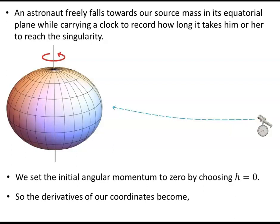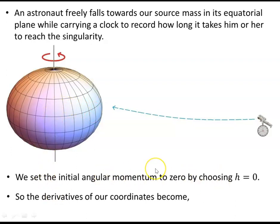Here is our situation: an astronaut freely falls towards the source mass in the equatorial plane, carrying a clock to record how long it takes to reach the singularity. We'll look at how long it takes to reach the outer event horizon, then the inner event horizon, and then the ring singularity. The astronaut is released from rest far from the source with zero initial kinetic energy and zero angular momentum in the phi direction.